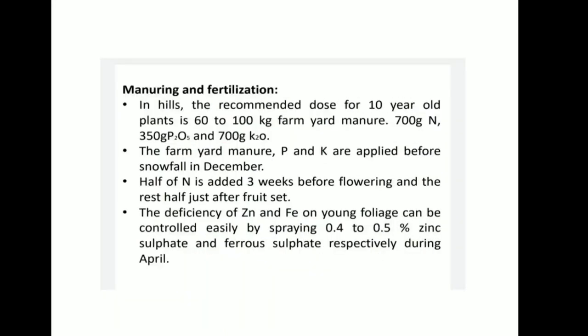Manuring and Fertilization. In hills, the recommended dose for a 10-year-old plant is 60 to 100 kg farm yard manure, 700 grams nitrogen, 350 grams phosphorus, and 700 grams potassium. The farm yard manure, phosphorus, and potassium are applied before snowfall in December. Half of the nitrogen is added three weeks before flowering and the rest just after fruit set. Deficiency of zinc and iron on young foliage can be controlled by spraying 0.4 to 0.5% zinc sulfate and ferrous sulfate respectively during April.